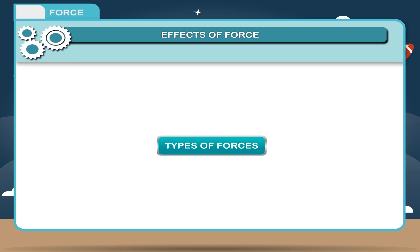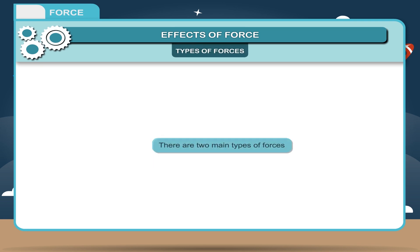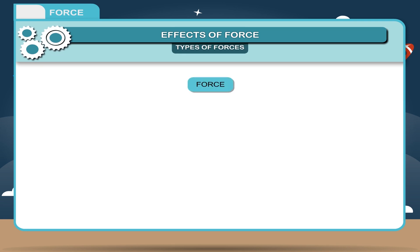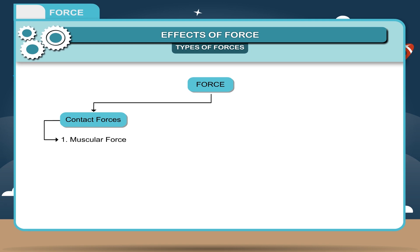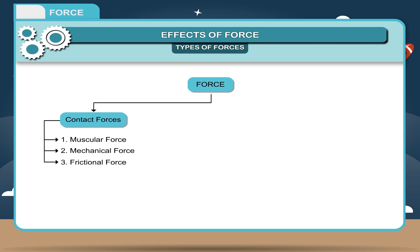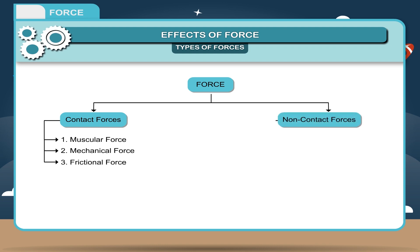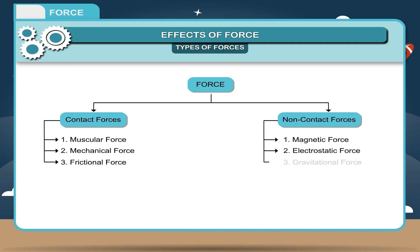Types of forces: There are two main types of forces — contact forces and non-contact forces. Contact forces include: 1. Muscular force, 2. Mechanical force, 3. Frictional force. Non-contact forces include: 1. Magnetic force, 2. Electrostatic force, 3. Gravitational force.